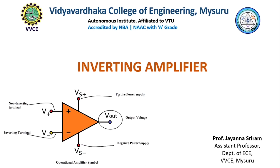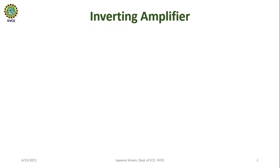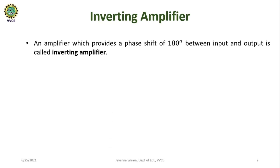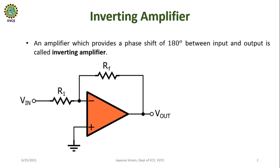Hello all. In this video I am going to solve few problems on inverting amplifier. Before that, let us understand inverting amplifier. An amplifier which produces a phase shift of 180 degrees between input and output is called an inverting amplifier. This represents the circuit diagram of an inverting amplifier where Vin is the input voltage applied to the inverting terminal and the non-inverting terminal is grounded.